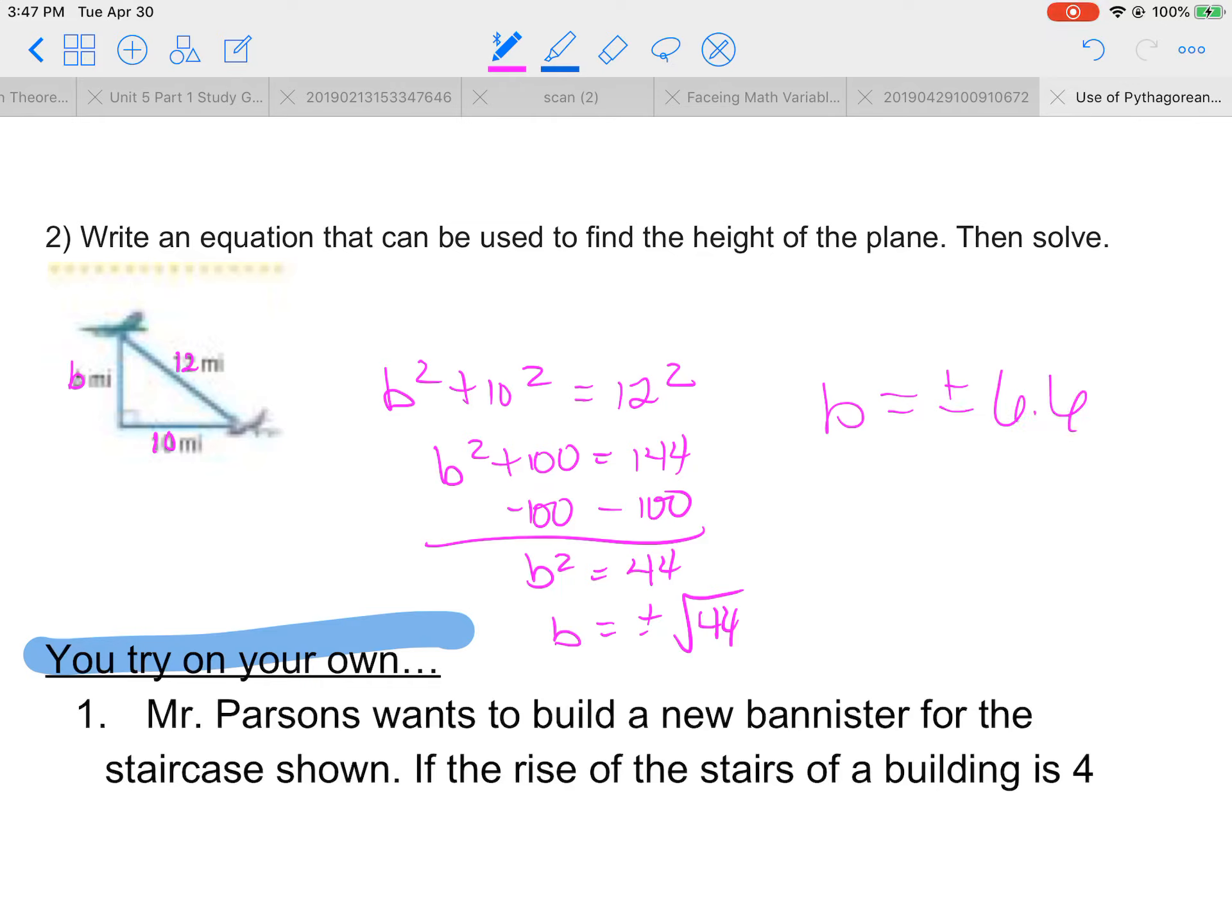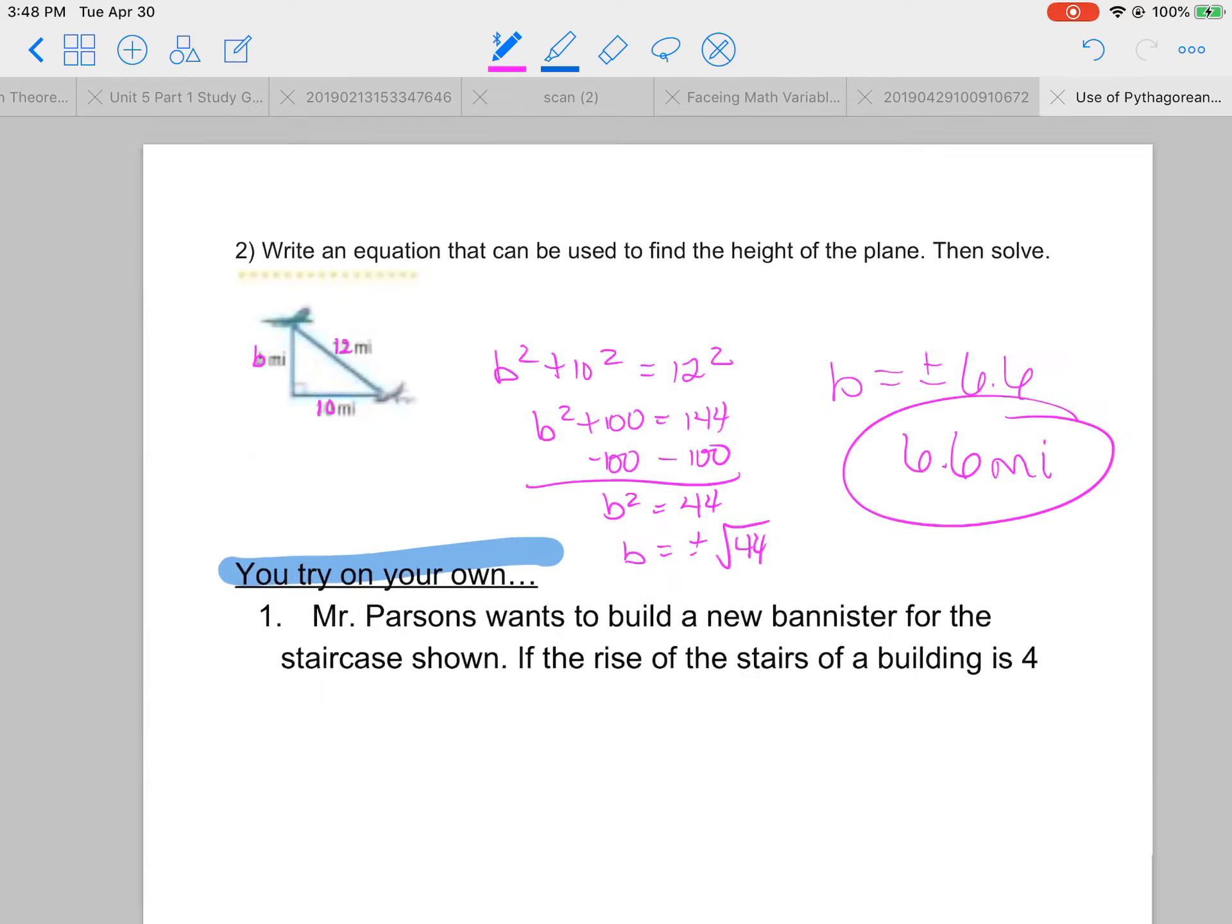So B equals plus or minus 6.6. Again, it wouldn't make any sense to have a negative plane height. So we would say that the height of the plane is about 6.6 miles.